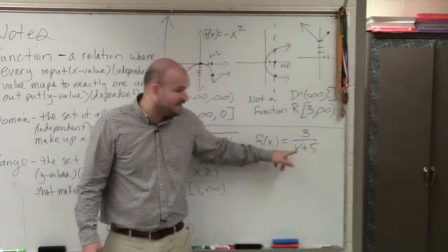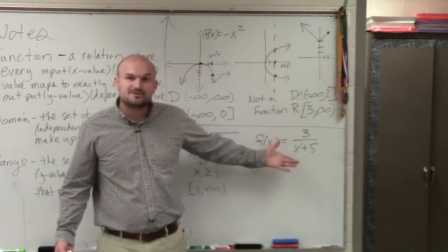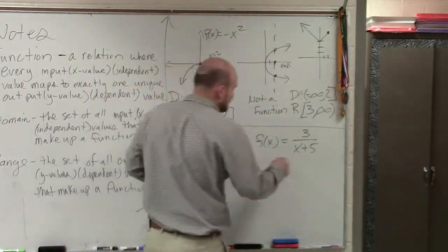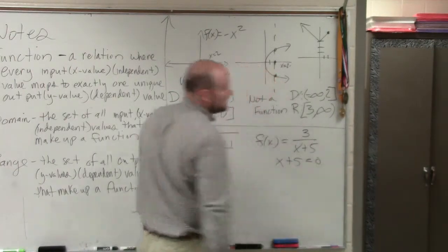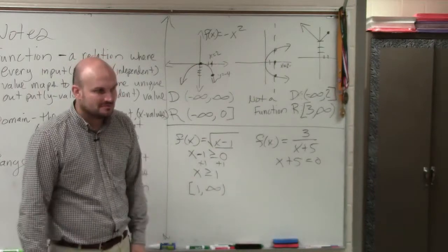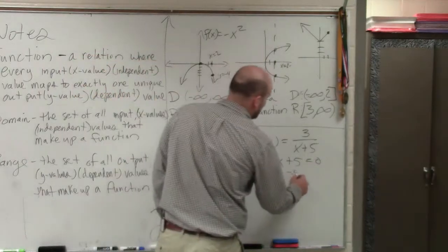So all numbers are going to work. The only number that I cannot plug in is what's going to make this zero. So what we do is we say it's going to be all numbers except for the number that's going to make that zero. So what's the number that makes that zero? Negative 5.